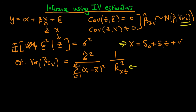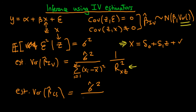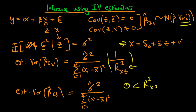So that's the estimated variance of beta hat IV. How does it compare with the estimated variance of beta hat least squares? The estimated variance of beta hat least squares, assuming the Gauss-Markov conditions, is equal to sigma hat squared divided by the sum from i equals 1 to n of (xi minus x-bar) squared. The only difference between the two is this R-squared XZ term on the right-hand side, and since R-squared XZ is between 0 and 1, the estimated variance of beta hat IV is greater than that of beta hat least squares.